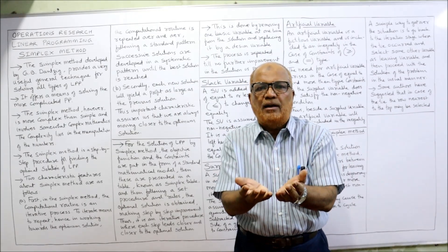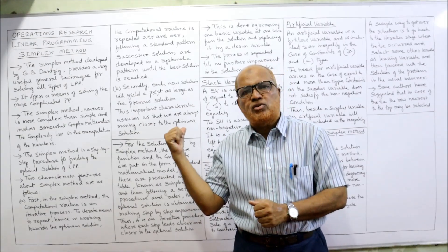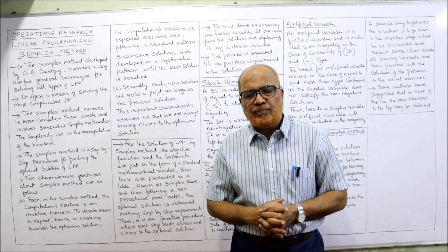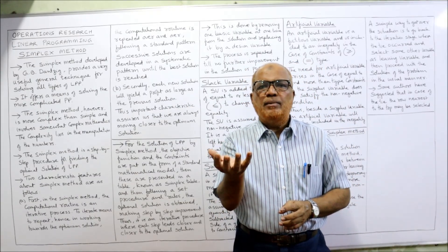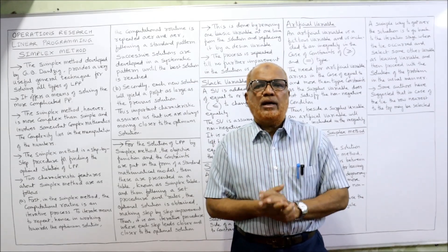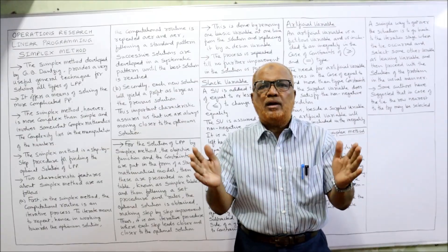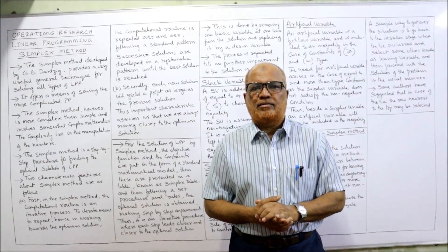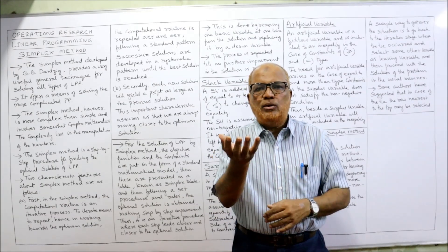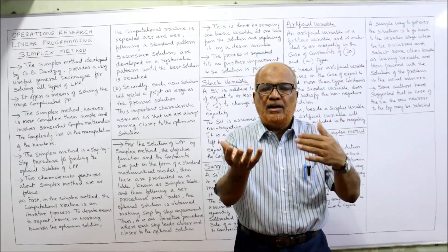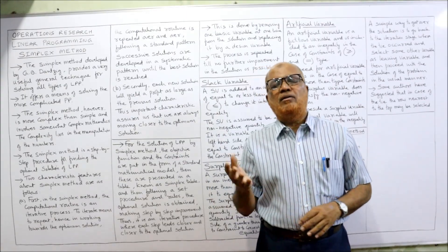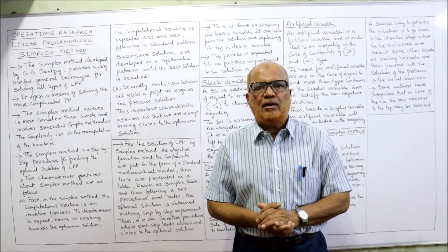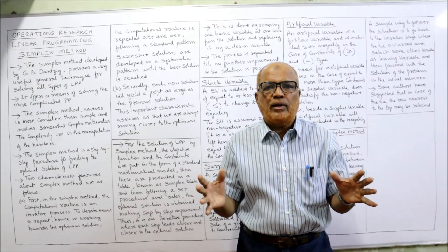Another example: suppose a marketing manager has limited funds. How to allocate these limited funds among different alternatives so that the objective of maximizing sales is achieved? By using limited funds and giving different advertisements — the advertisement can be given in newspaper, magazine, hoarding, or electronic media — different options are available. Linear programming will be very helpful in that situation.